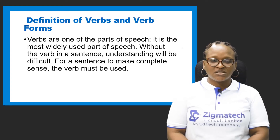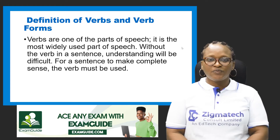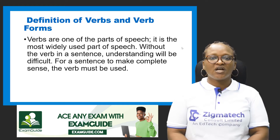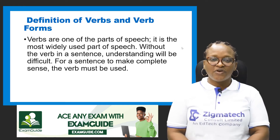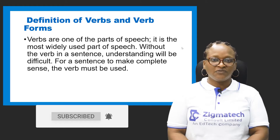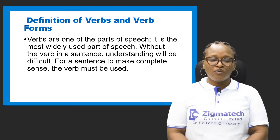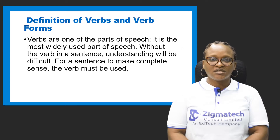We'll have the definition of verbs and verb forms. Verbs are classified under parts of speech. Without parts of speech in English language, the essence of language will be defeated. Parts of speech basically contain all aspects of English when it comes to our speeches and our writings. The parts of speech we have in English are basically eight in number, and verbs are one of them.